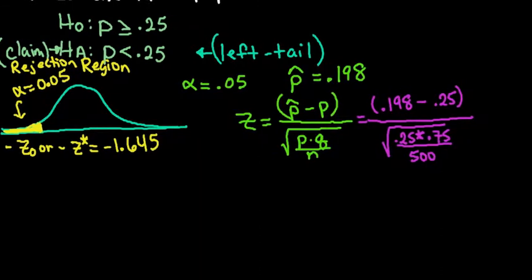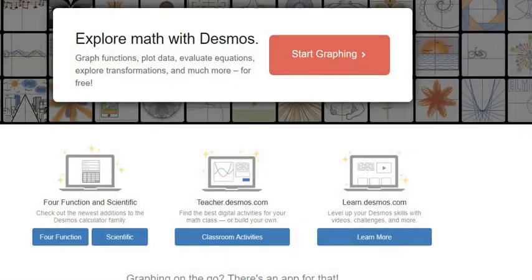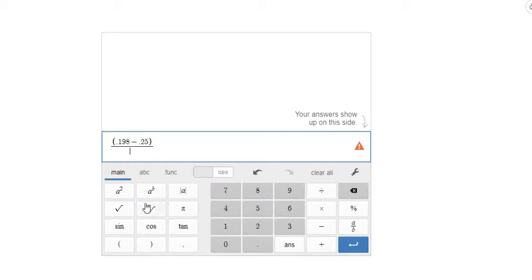I did want to show you how to plug this into a calculator. I'm just going to use a free calculator online called Desmos, desmos.com. They are a great resource if you're not familiar with them. I'm going to go into the scientific calculator. Then I'm just going to plug it in. Make sure that you put the p-hat, the 0.198 minus 0.25.